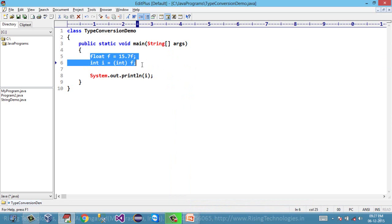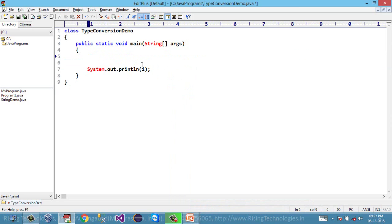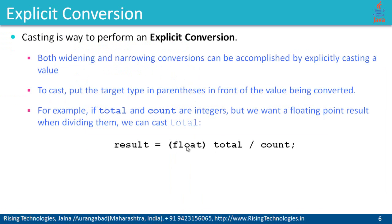Explicit conversions are useful when you want to convert the result of a particular expression. Suppose I have a total variable and a count variable — both variables are of type integer. We know that this expression is also going to produce an integer result, but actually I want that result in floating form. So we can convert the result of this particular expression using type casting.